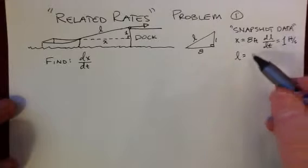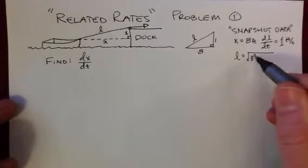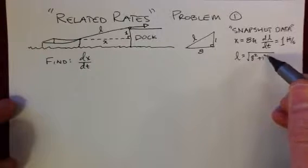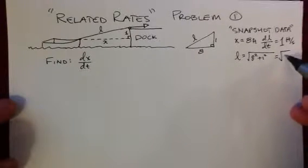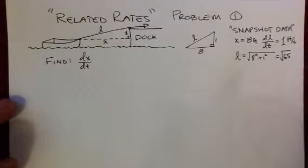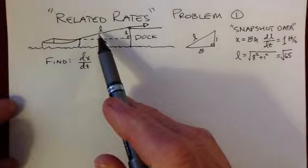So I can solve for L by doing a little Pythagoras. And that's going to be the square root of eight squared plus one squared. So 64 plus one is 65. So I'm going to keep it in exact terms. Don't go all decimal if you don't need to. So the length of that is exactly radical 65.